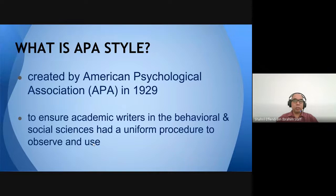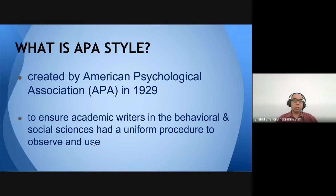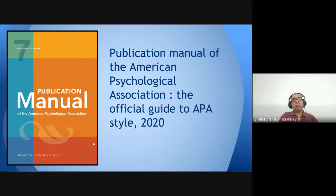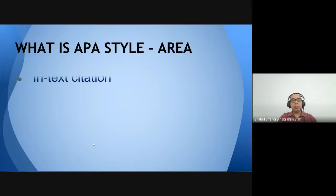APA style stands for American Psychological Association, developed in 1929. Most academic institutions use APA style to ensure academic writers in the behavioral and social sciences have a uniform procedure. This citation style is typically adopted by writers in behavioral and social sciences fields. The latest publication manual is the seventh edition, published in 2020, and it is available in the OEM digital collection in printed format.